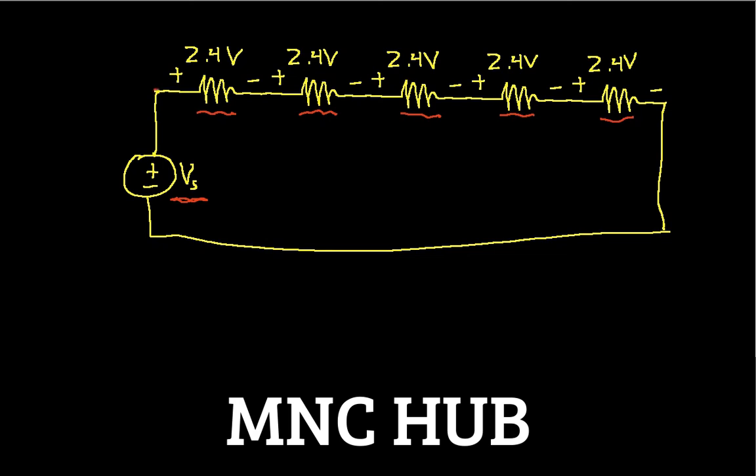I can apply Kirchhoff's voltage law. So I'll start up in this corner, go this direction, around the loop. In this circuit, it's actually pretty easy to tell what the loop should be because there's only one loop in the circuit. As I went that direction, I encountered the first light bulb, which had a voltage of 2.4. I'm going from high potential to low potential, so this is a positive 2.4.